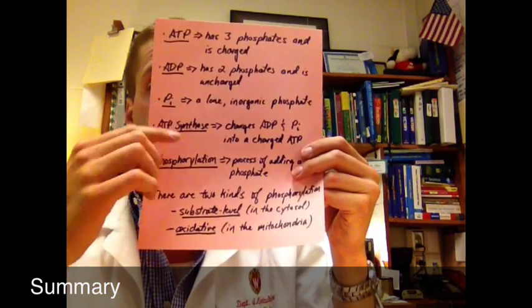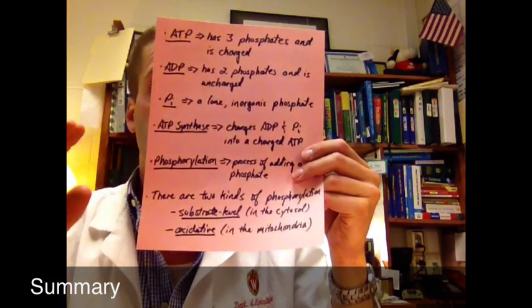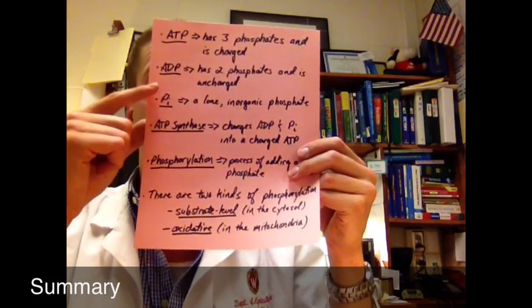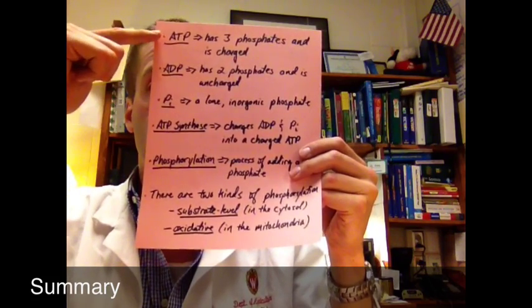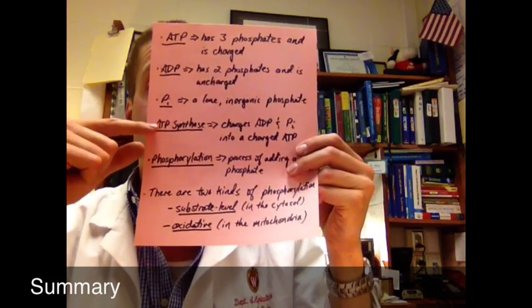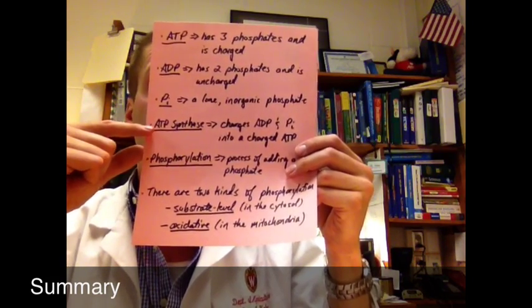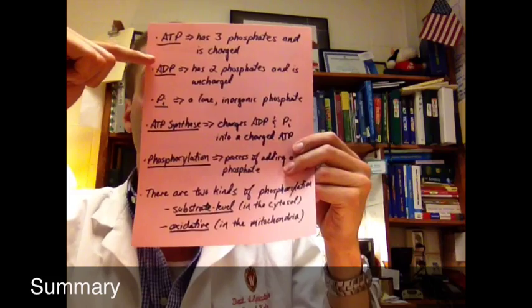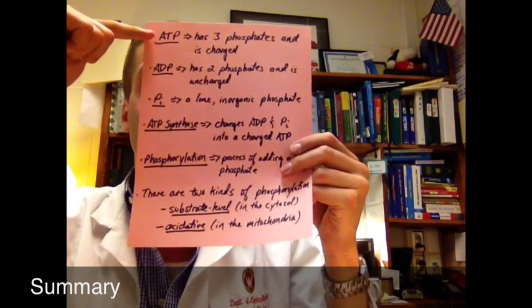We have PI, which is just a lone phosphate floating around by itself. Combine this with this, and we make that. PI plus ADP makes ATP. ATP synthase is one of the molecules that will combine PI with ADP to make the charged ATP.